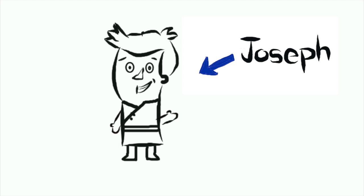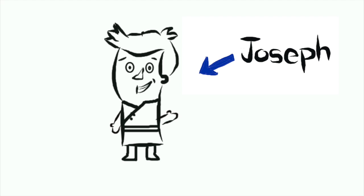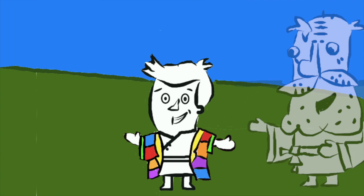This is Joseph. He's 17 years old and lives in the land of Canaan. Out of his 12 siblings, he was the most loved by his dad, Jacob.